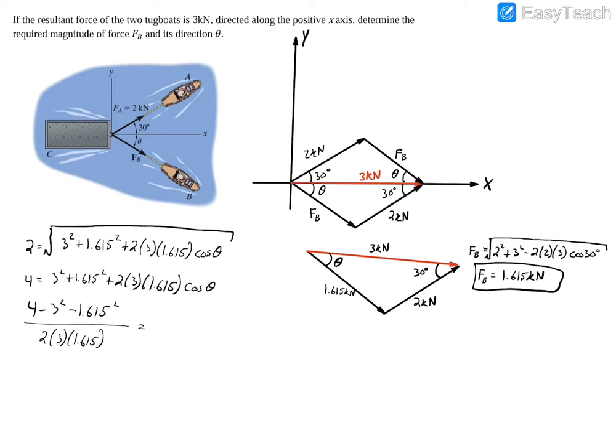So to get just theta, we're just going to take the inverse cosine of this whole thing here. Sorry about the messiness there, but all this should equal theta, and if you plug it in your calculator, you'll actually have that theta equals 141.74 degrees.